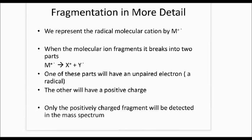When that radical cation breaks up, you get X-plus — a positive cation — so half the fragment has the positive charge. The other half has the radical, the unpaired electron. One part has an unpaired electron and is a radical; the other has a positive charge. In a mass spectrometer, only the positively charged species is detected, because the Y fragment has an unpaired electron but no charge, so it's not affected by the magnetic field. Only the positively charged fragment will be detected in the mass spectrum.